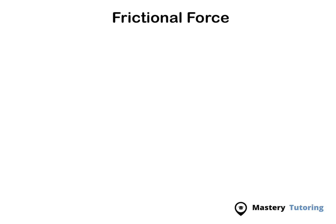Frictional force is a force that acts opposite to the direction of the motion. So if you have an object that is moving to the right at a velocity of V, frictional force will be taking place at the contact surface — take this as your road.